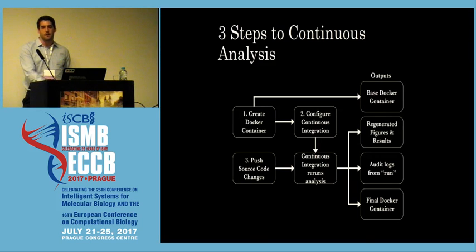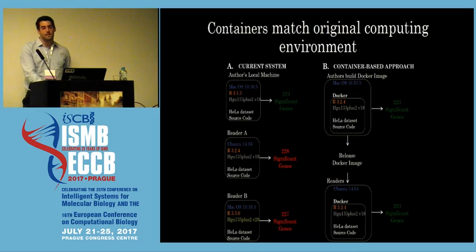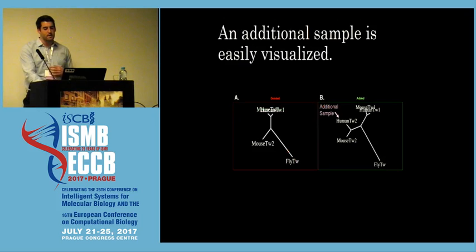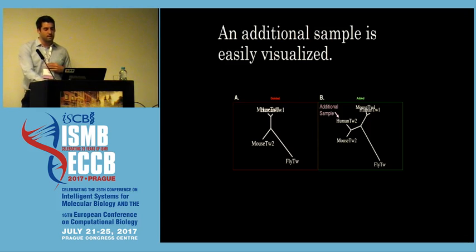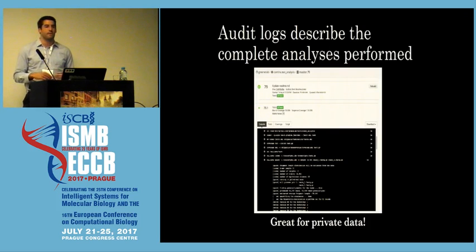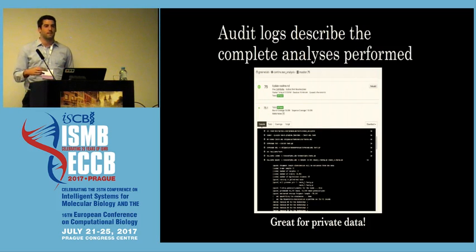It gives some really useful outputs. Beyond the normal Docker containers where you can recreate the exact environment of the original authors, you're getting things like a comparison of results and a time sequence of results over time. In this case an additional gene was added and you can see the way it actually affects the result. You also get audit logs which describe everything that was done in this continuous integration container. Even in cases where you can't share the actual data, you can share this audit log so people can see if their steps diverge from yours at step three as opposed to step 100 where the final result is.